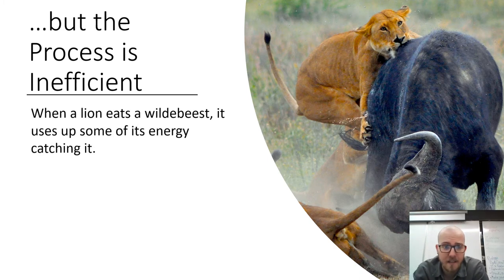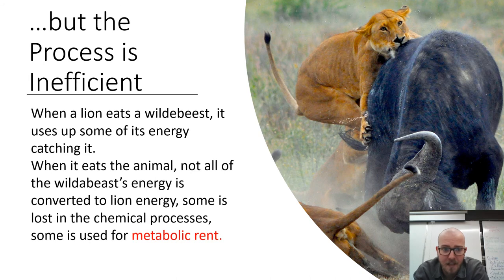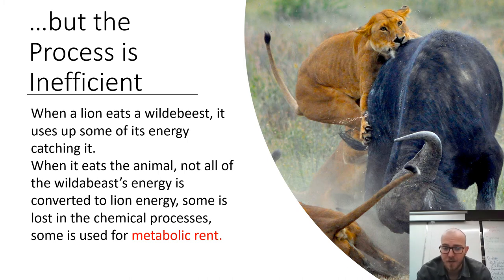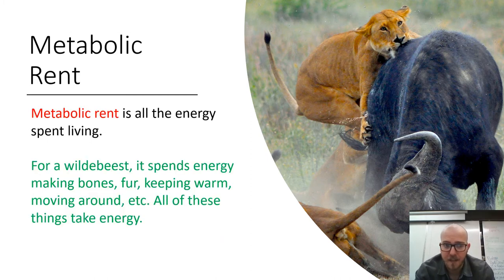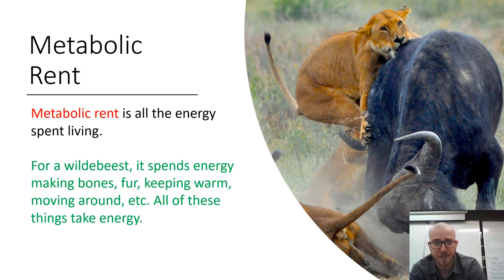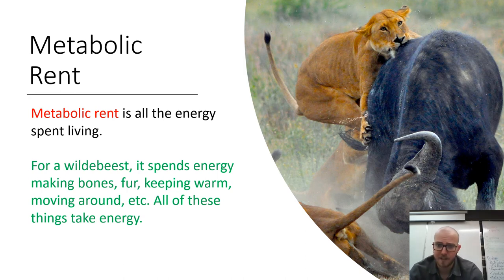When a lion eats a wildebeest, it's got to hunt it down, using energy to catch it. And when it eats the animal, not all of the energy from that wildebeest is converted into energy the lion can use. Some of it is lost in chemical processes used for survival — this is referred to as metabolic rent. Metabolic rent is all of the energy spent staying alive: for the wildebeest, that includes making its bones, growing fur, shedding, staying warm, moving around, reproduction — just doing wildebeest things.